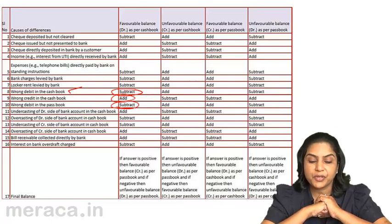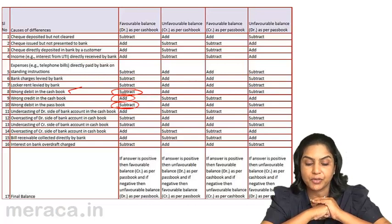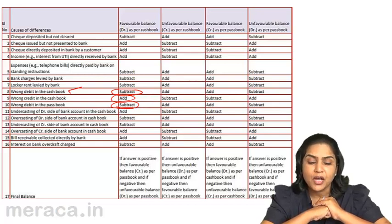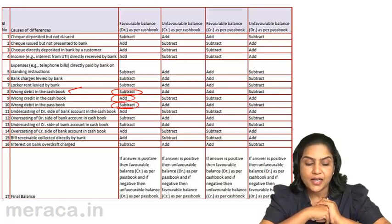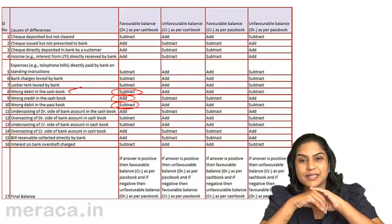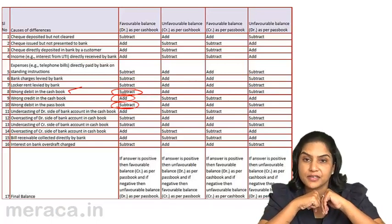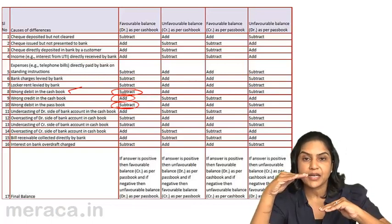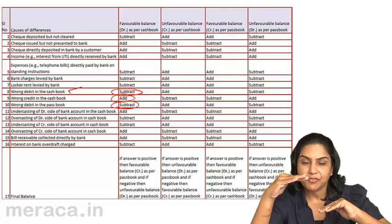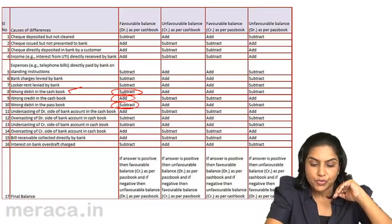Undercasting of the debit side of the bank account in the cashbook. Let us do this from the passbook. If there is undercasting of the debit side — undercasting means less total — the debit side of the bank account indicates the receipt side. So, the receipt side being less means the balance is less. Cashbook balance is less, passbook is up. From passbook to cashbook, we would deduct.